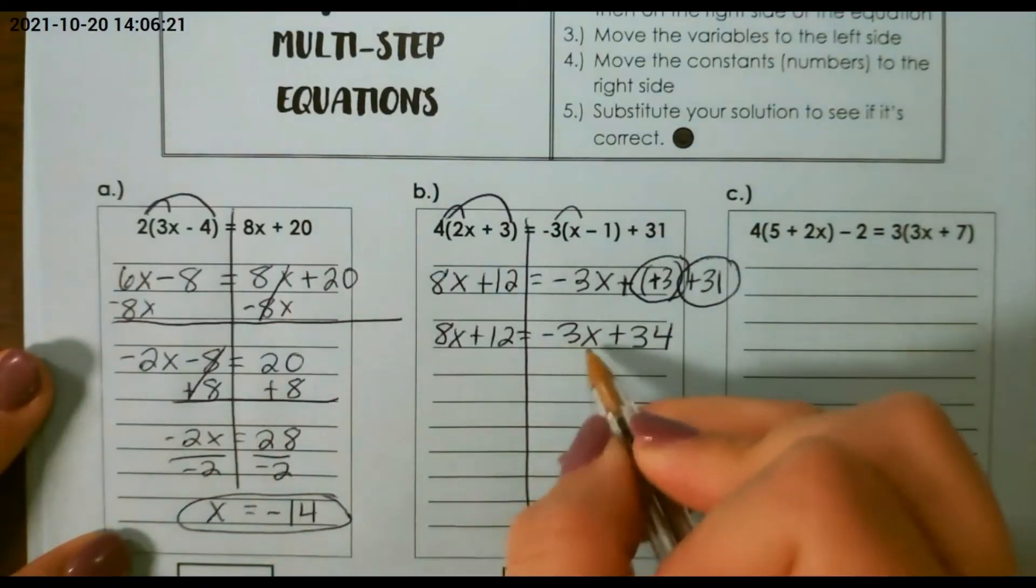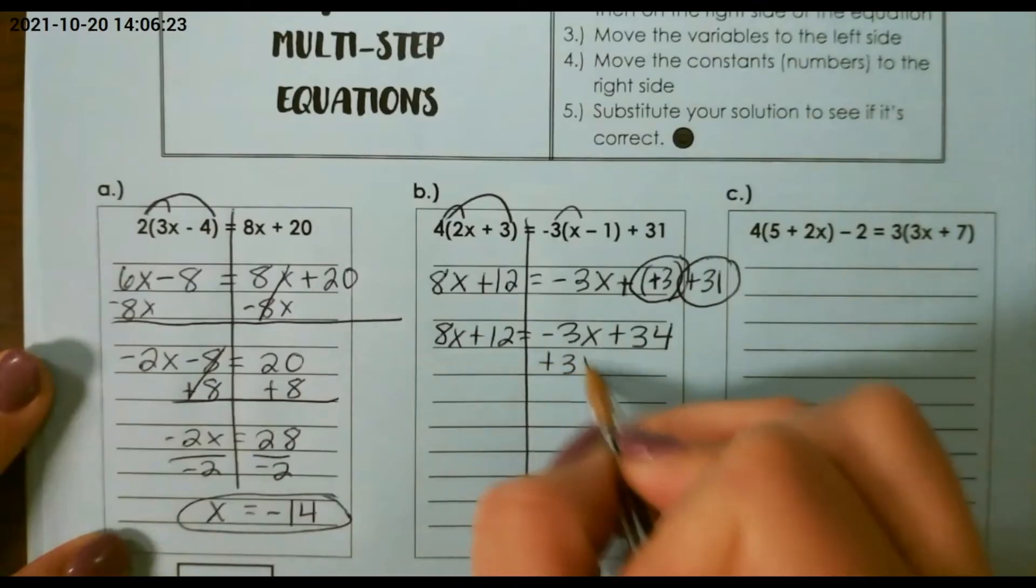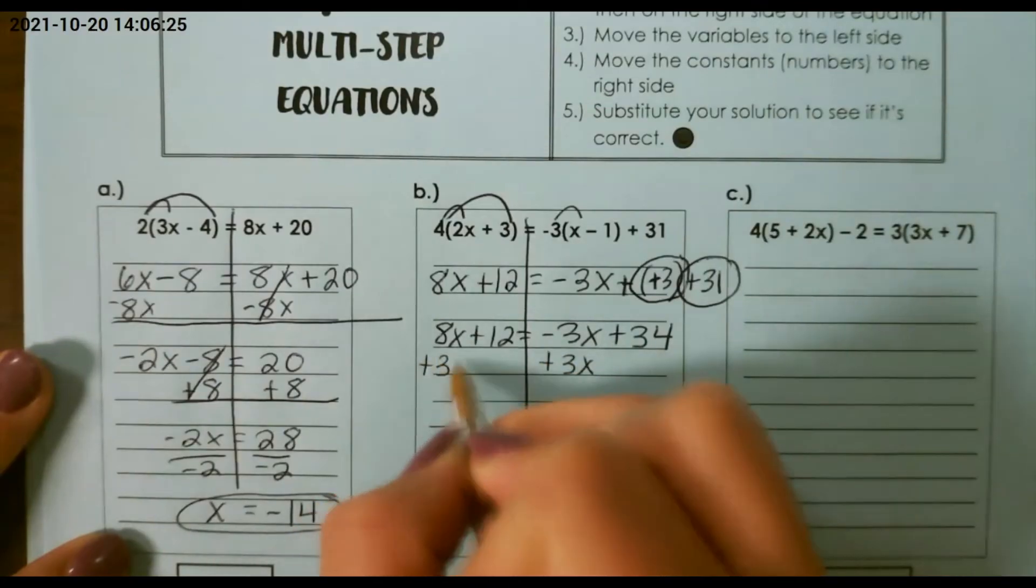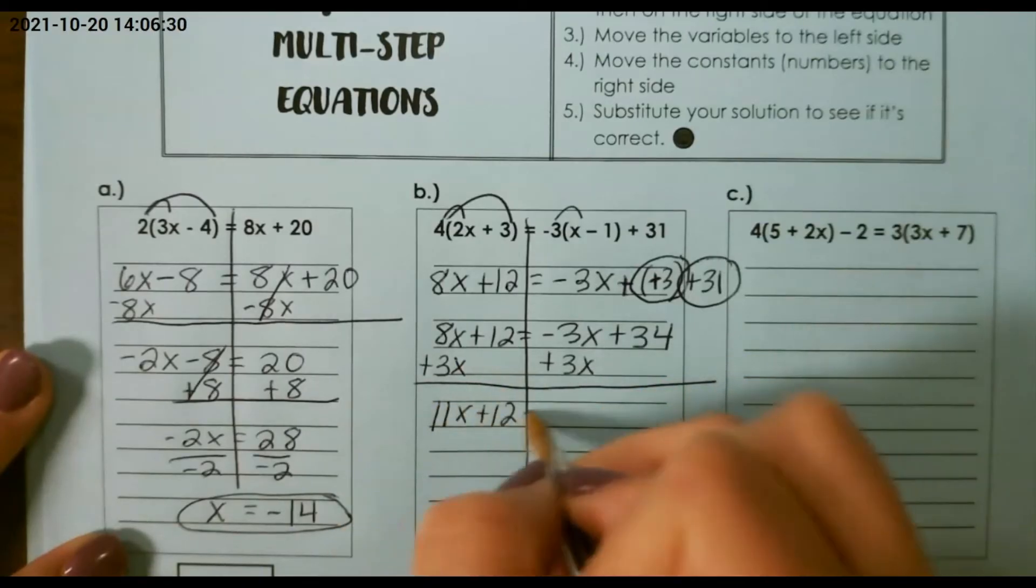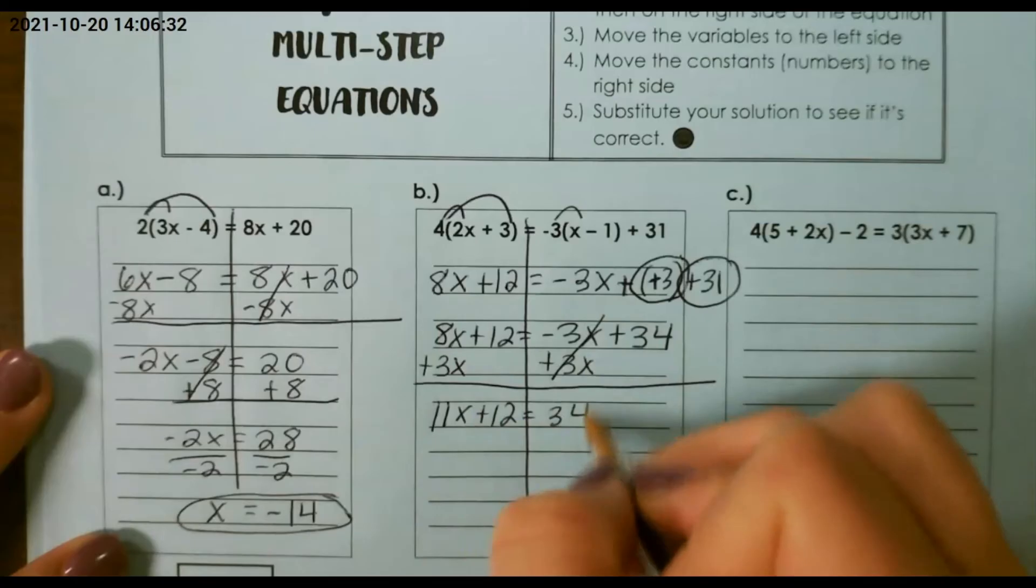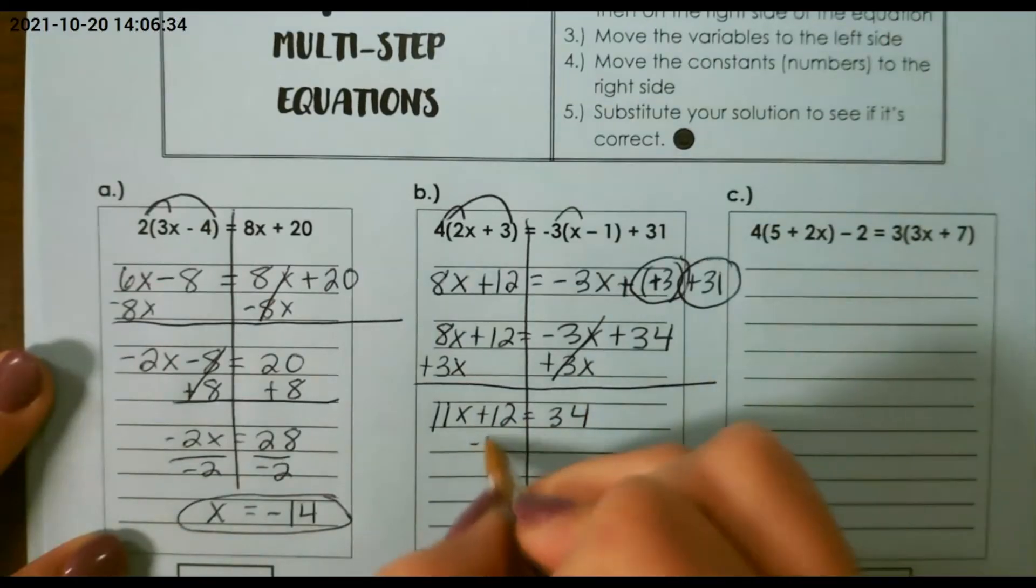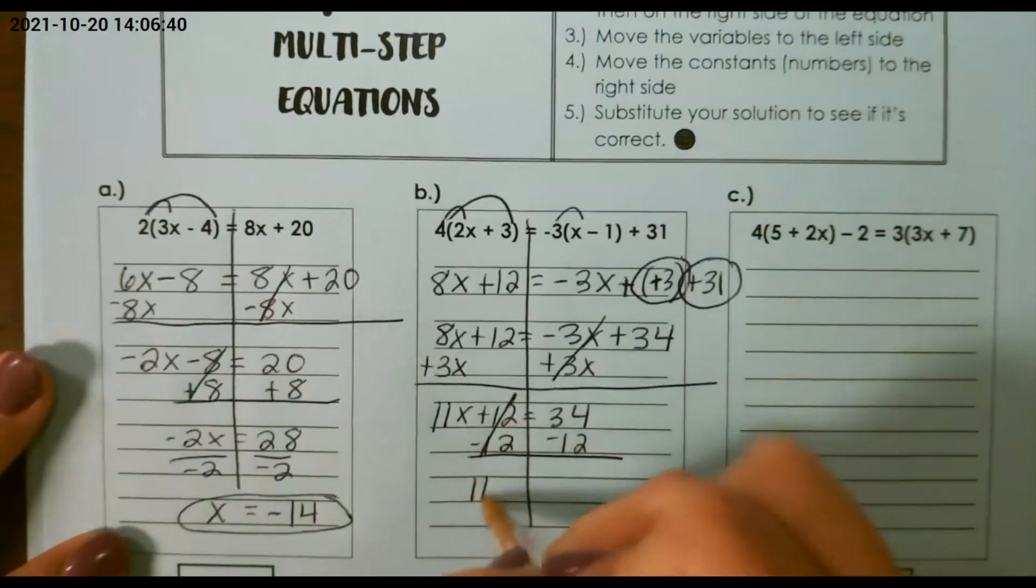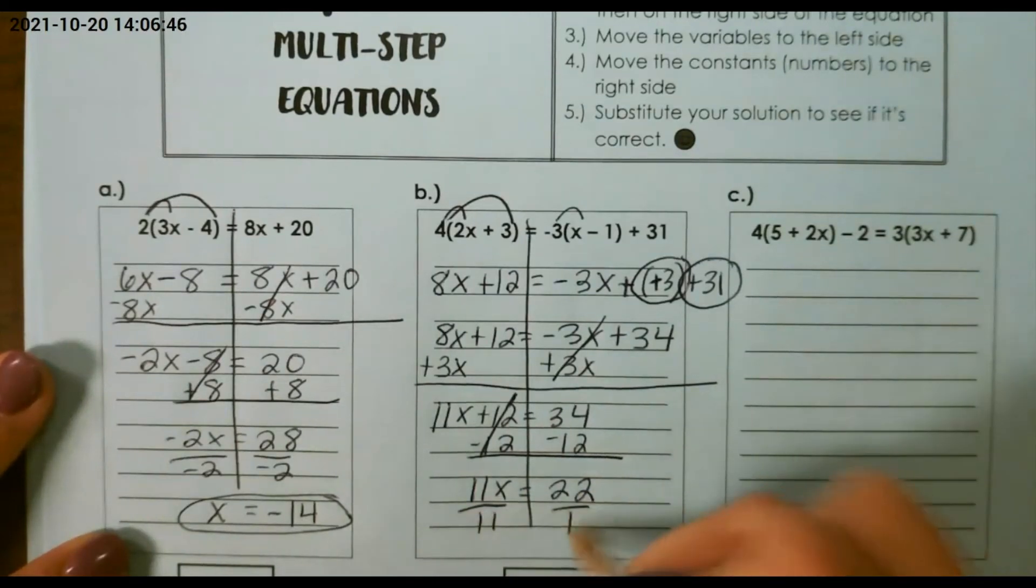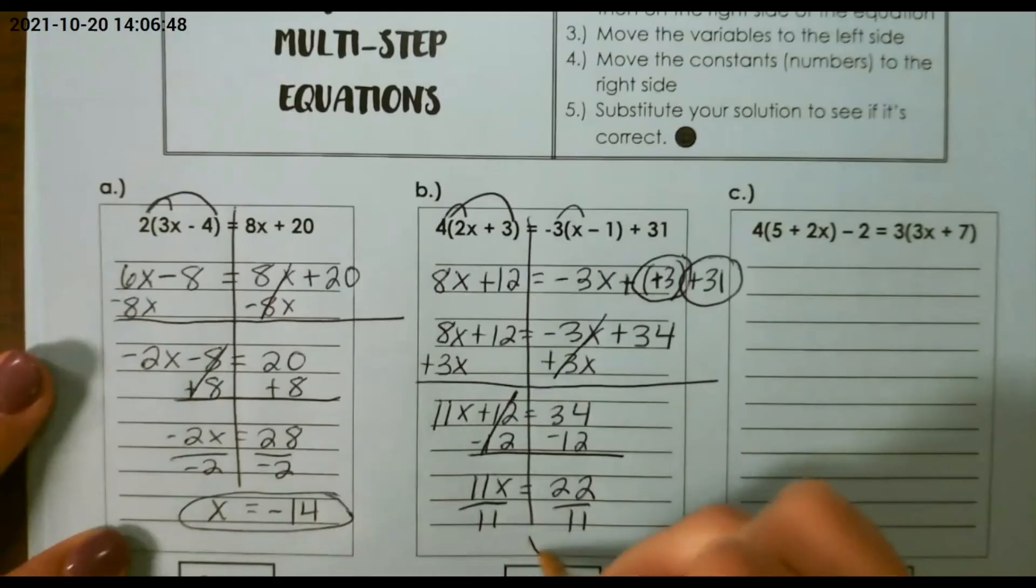I'm going to take negative 3x to the left by adding 3x. So 11x plus 12 equals 34. Then I want to subtract 12 from both sides, because that's the inverse operation. 11x equals 22. Divide by 11 on each side, and that will give me x equals 2.